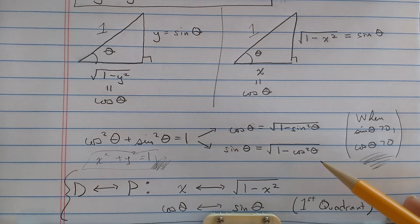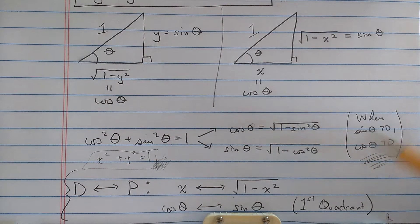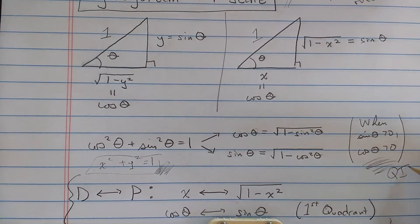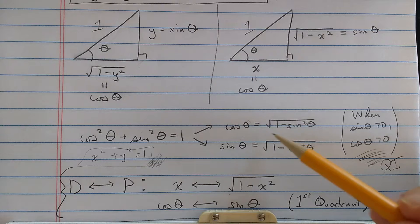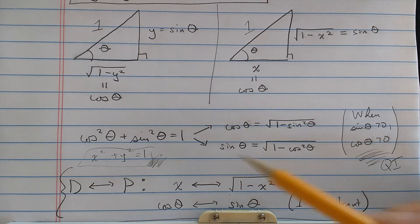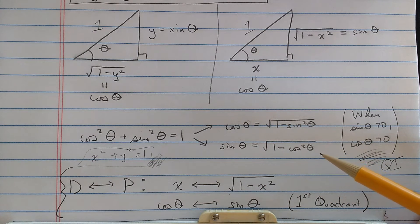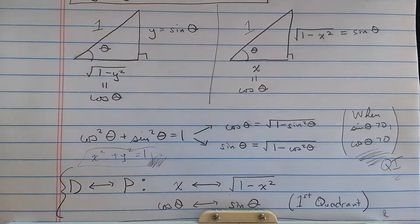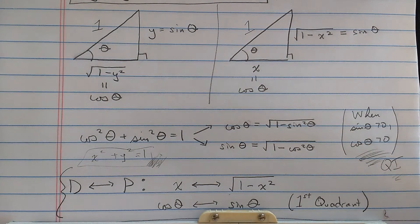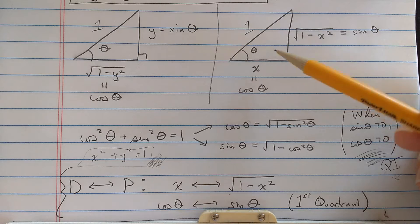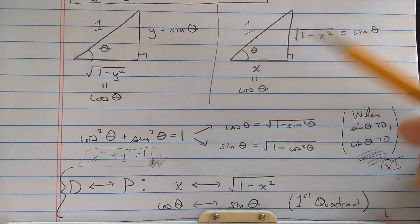At least when sine and cosine are positive, that is, in quadrant 1, then cosine theta is square root 1 minus sine squared theta, and sine of theta is square root 1 minus cosine squared theta. Of course, quadrant 1 corresponds to angles between 0 and 90 degrees, which is exactly the kind of angles we have in a right triangle.